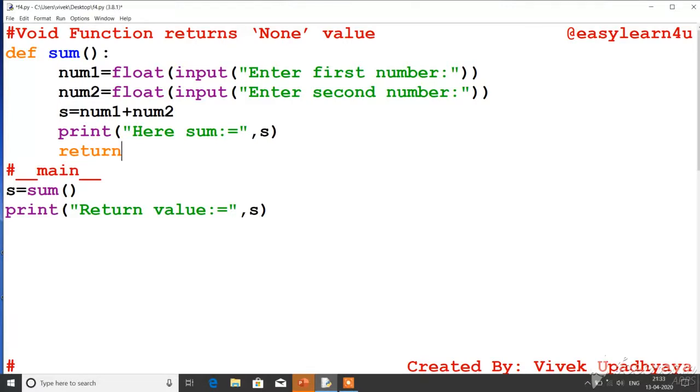In this case jo s hoga wo kya value save karega? Wo fir ek value save karta hai that is called None. To agar main isse execute karu to ye aapko simple None aapko wo return karke de dega.